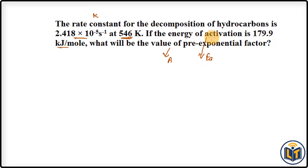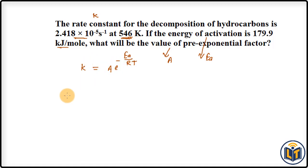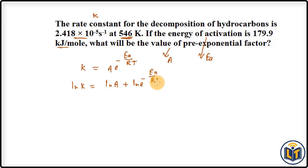We can apply the Arrhenius equation: K = A·e^(−Ea/RT). Taking the natural log on both sides gives: ln K = ln A + ln(e^(−Ea/RT)). Since ln and e cancel out, we get: ln K = ln A − Ea/RT.